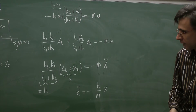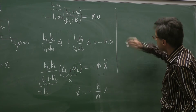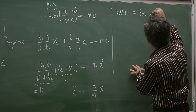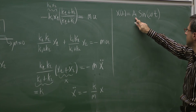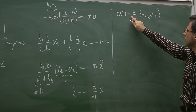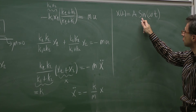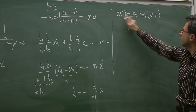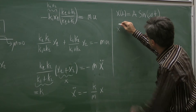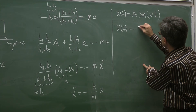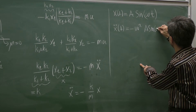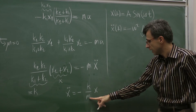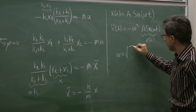We have two solutions for this differential equation. One solution is x of t equals A sine omega t. Taking the derivative once introduces an extra omega; taking it again introduces a negative sign times omega. So taking the derivative twice introduces negative omega squared. Substituting back, negative omega squared times A sine omega t equals negative k over m times A sine omega t, giving omega squared equals k over m, so omega equals the square root of k over m.